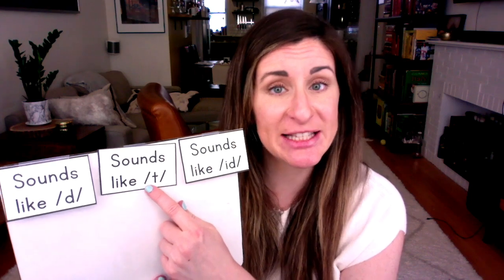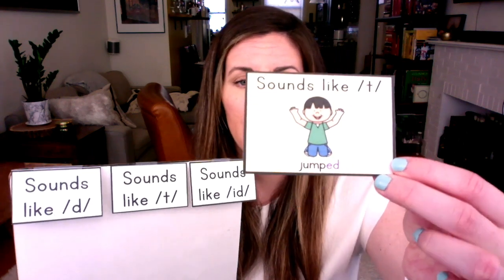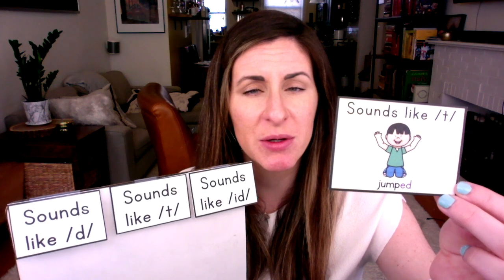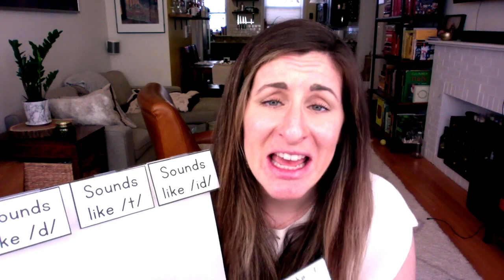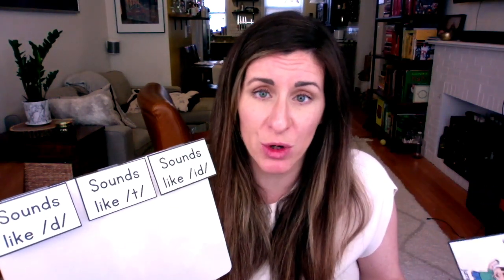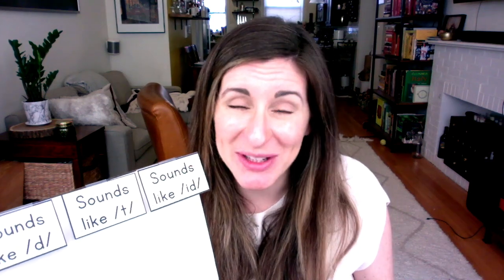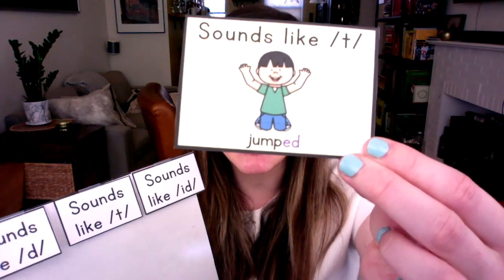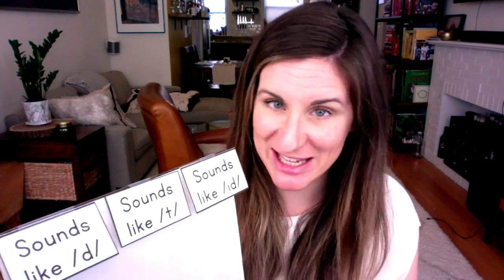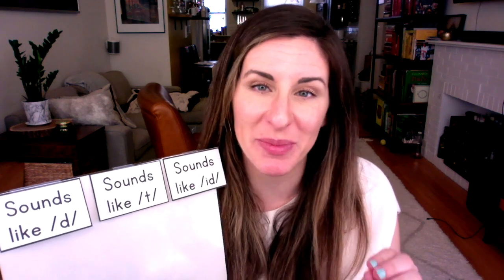Sometimes that E-D suffix sounds like T — it just depends on the word. For example, this one shows the kid jumped. Try saying that word — jumped. Jumped sounds like it has a T on the end. And if you were sounding that word out and you wrote a T, I wouldn't mark it wrong, because when we say the word 'jumped' it really sounds like a T is on the end. Now you know that it's actually E-D. The E-D ending can sound like T. We never put a T on the end of a word to make the word happen in the past — it's always going to be E-D.